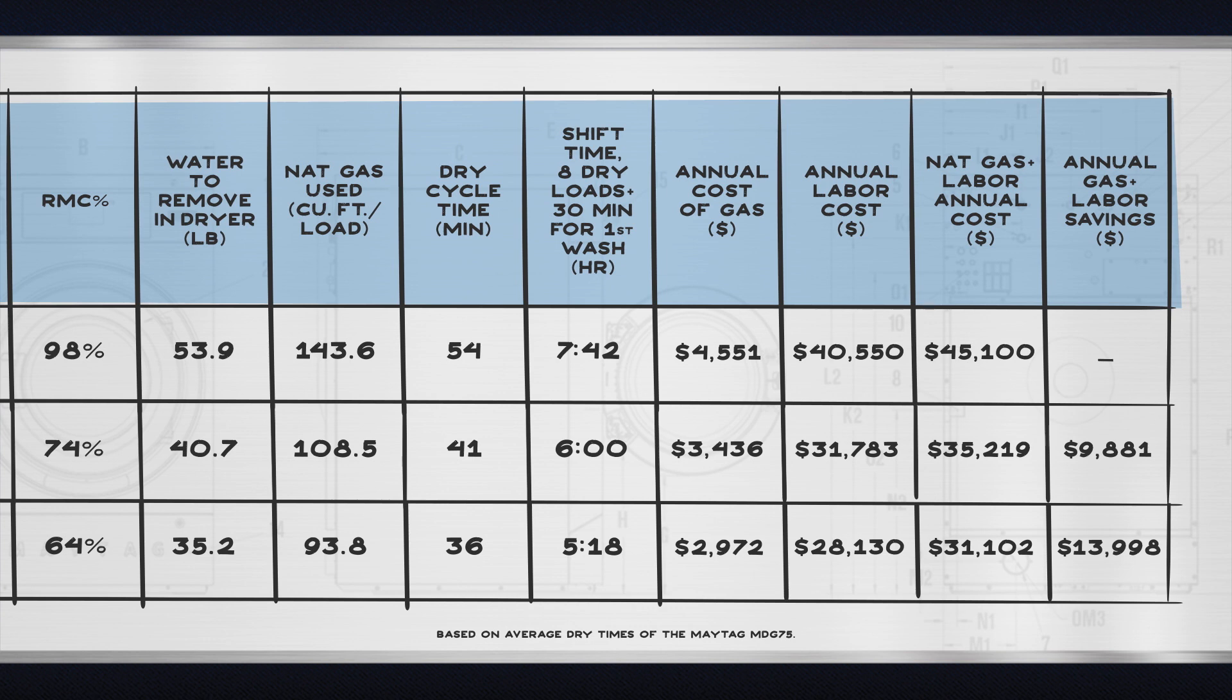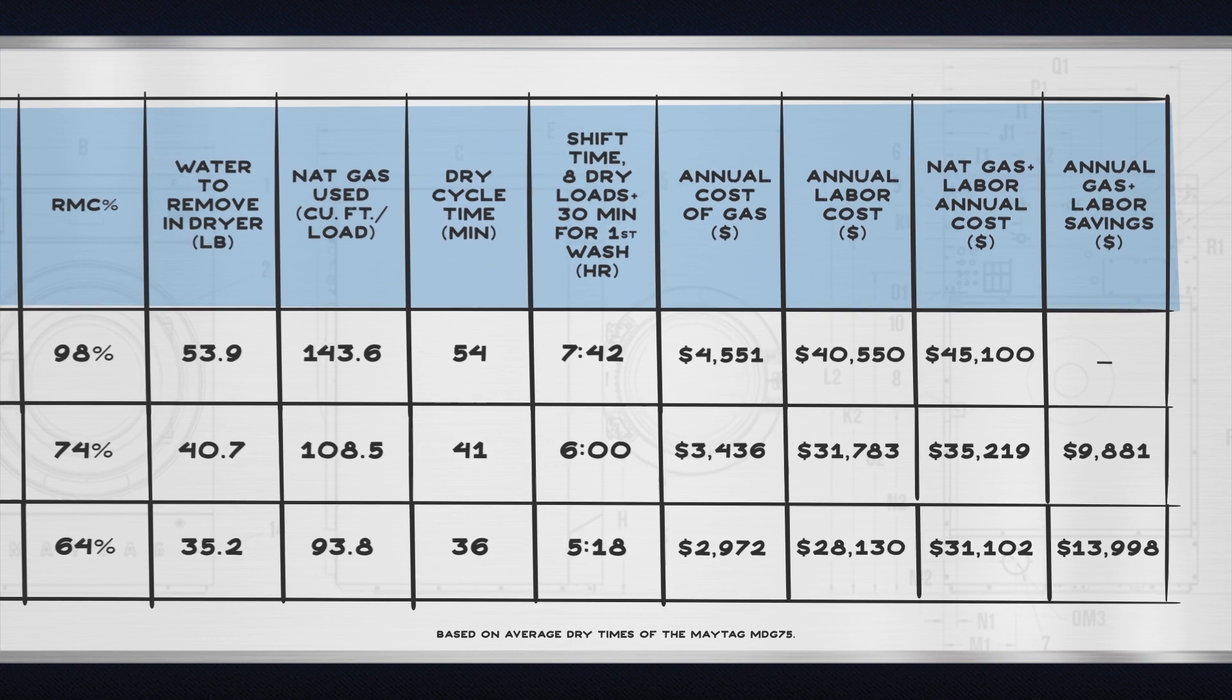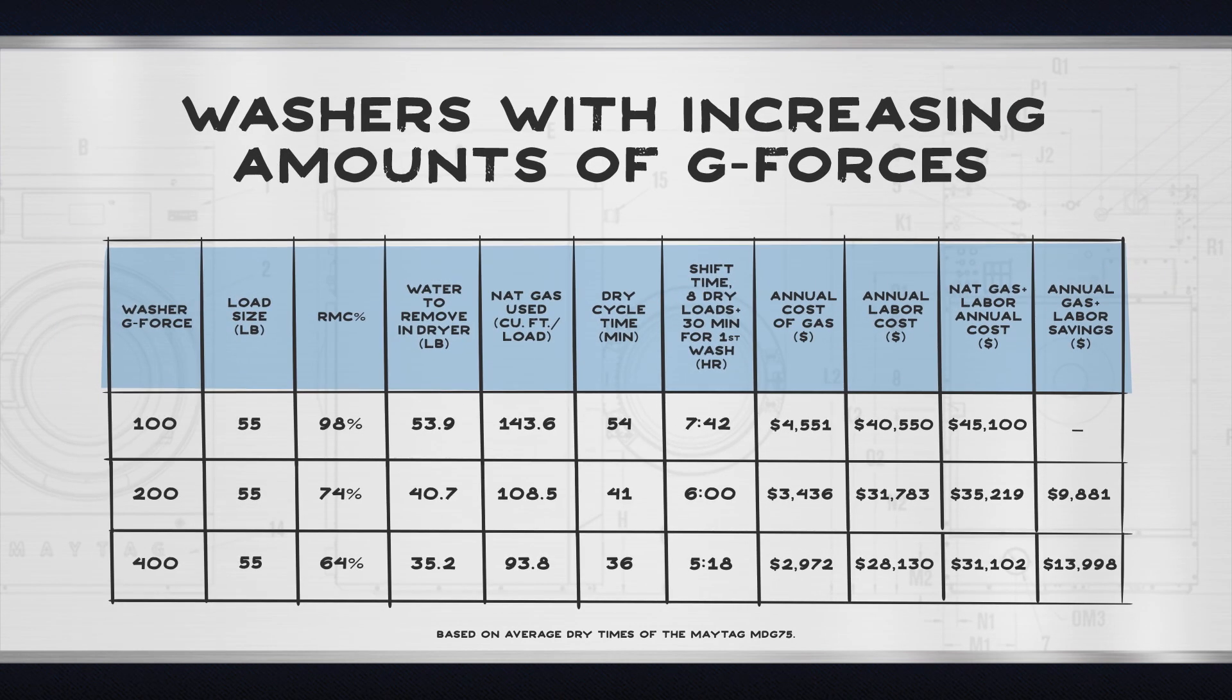Granted, washers with higher extraction forces will cost more to purchase, but considering your operation expects to run the washers 15 years or more, your total operational savings should quickly cover the difference. Keep in mind the lower priced washers that spin out at 100 g's don't have the option to increase force to optimize operational costs, but many 200 and 400 g washers do have the option to reduce force for special loads.